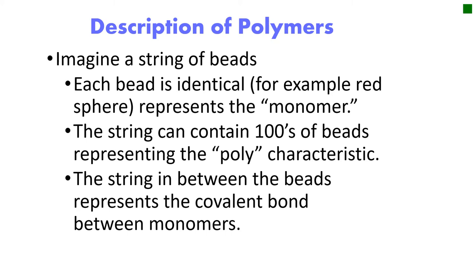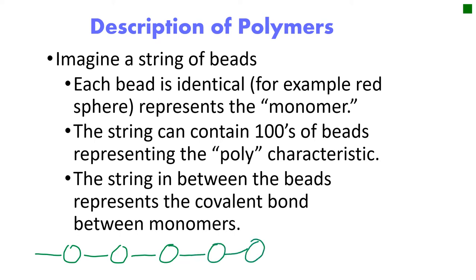To clarify more about the concept of polymers, imagine a string on which there are beads to make, for example, a bracelet, arm braces, or necklaces. Compare the beads to the monomer, the string to the covalent bond that joins the monomers together, and then that string of beads to a polymer — whereby you can have even a hundred beads or more. You will see a string followed by a bead, then a covalent bond, a bead, a string, a bead — and this continues until you have a large chain.